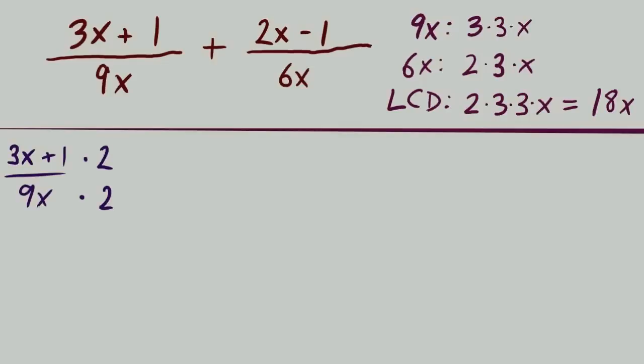So I've made some space, took that first fraction, 3x plus 1 over 9x, and spotted that it needs a times 2 to the denominator to get it from 9x to our LCD, 18x. And if it's a 2 on the bottom, it's times 2 on the top. It will have to be distributed, 3x plus 1, two terms. So distributing that 2 leads us to 6x plus 2 over 18x. Looks good. We have our LCD.